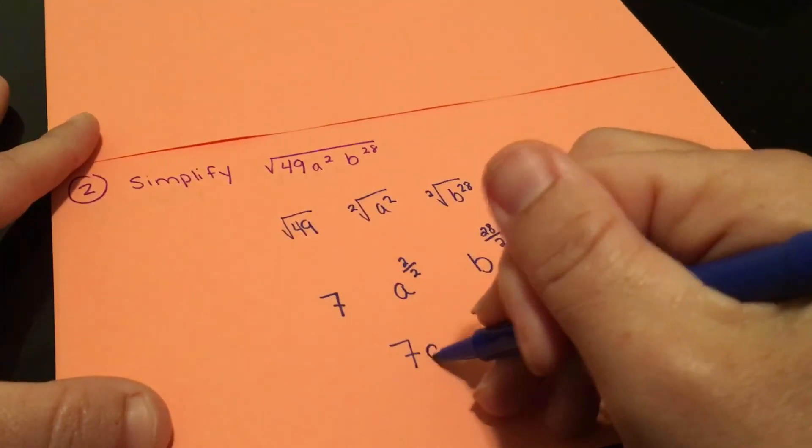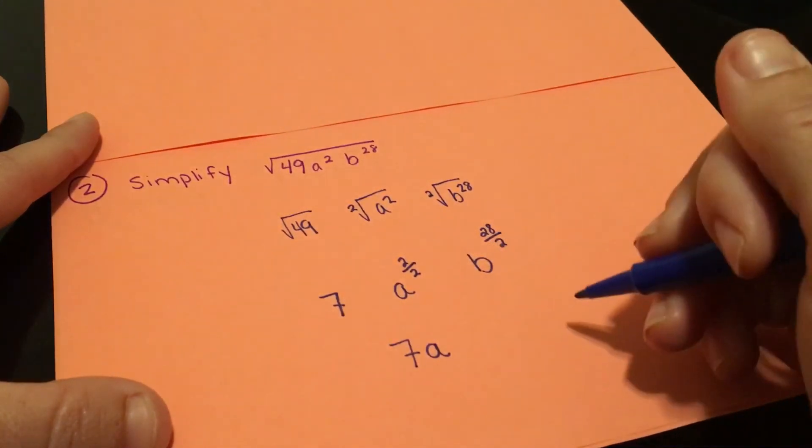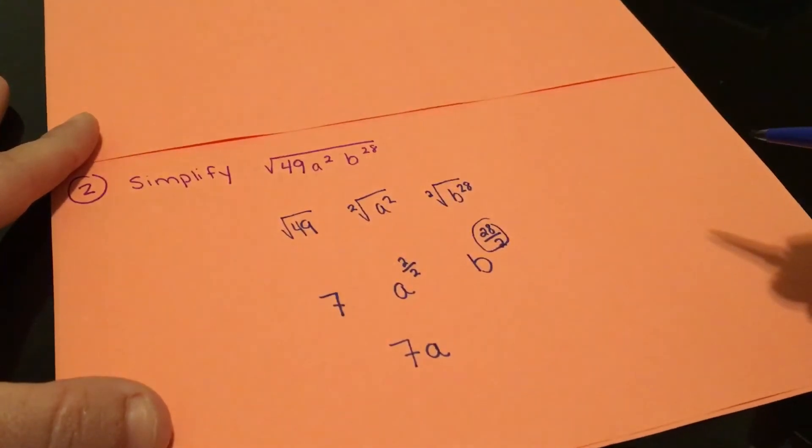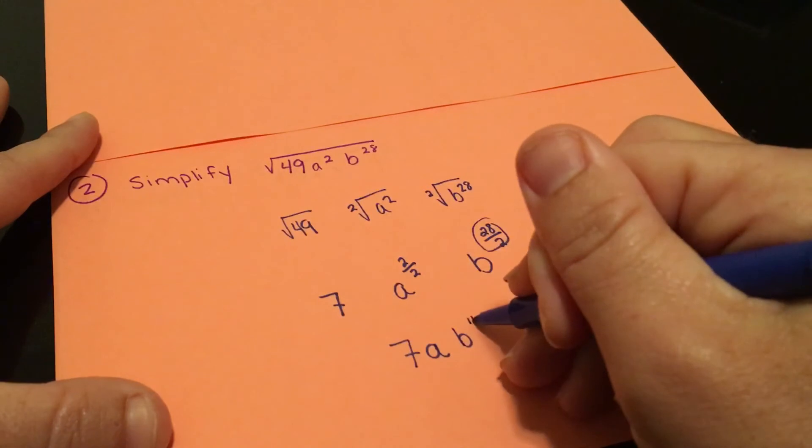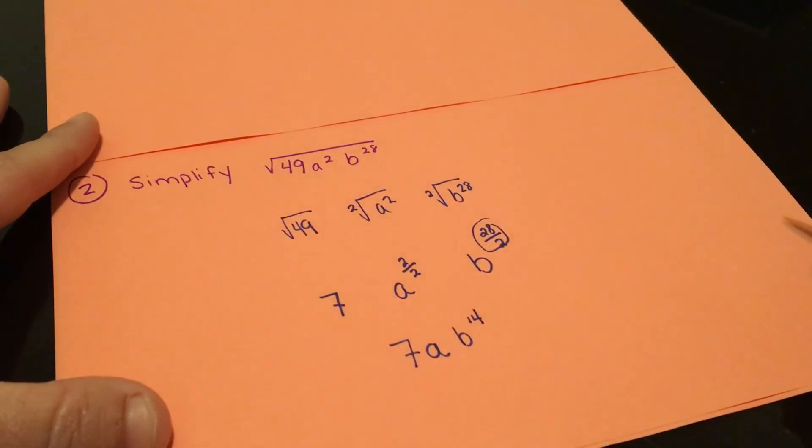So bring down the 7. And then we have a to the 2 over 2 would be 1. And then 28 over 2 would give us a 14. So this would be 7ab to the 14.